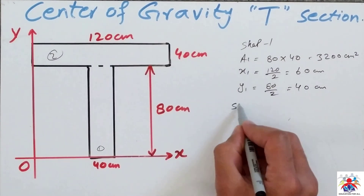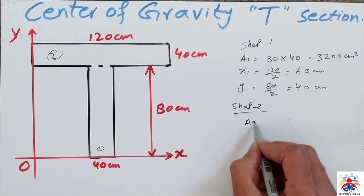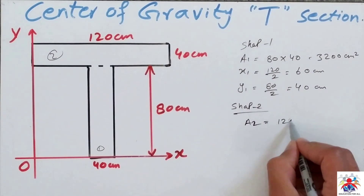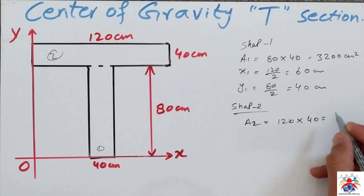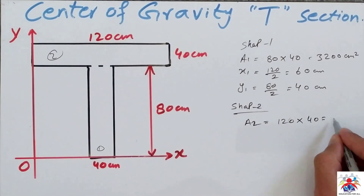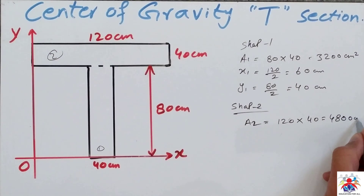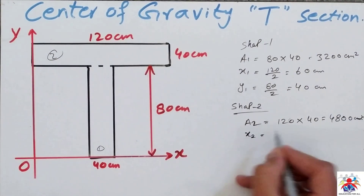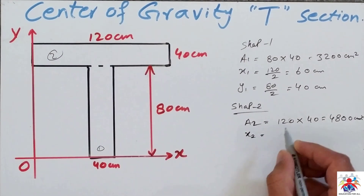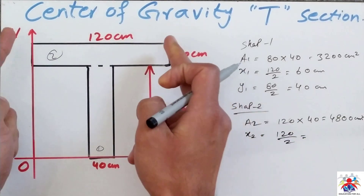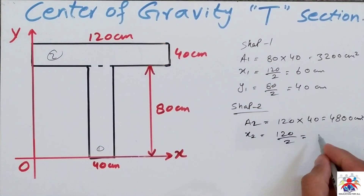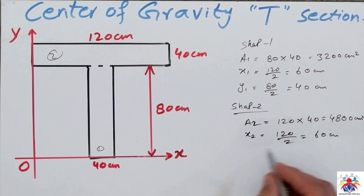Now for shape two, area two is going to be 120 multiplied by 40, which equals 4800 square centimeters. Then x2 is 120 divided by 2, similar to shape one, giving us 60 centimeters.